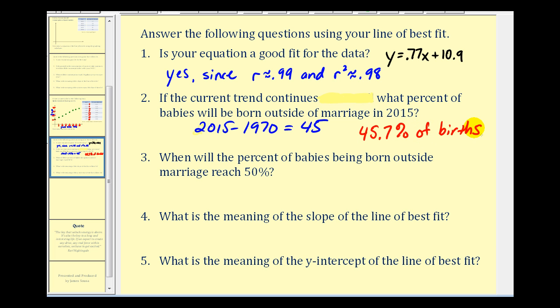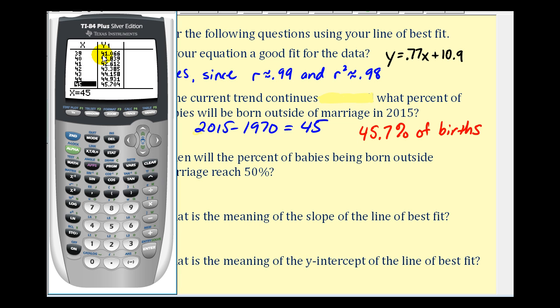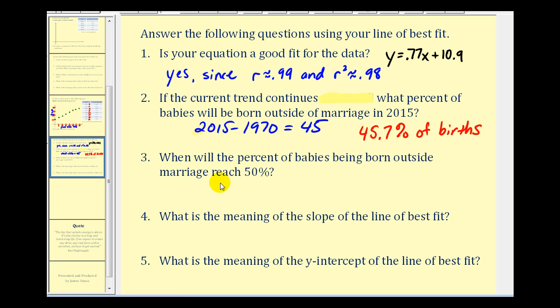Number three, when will the percent of babies being born outside of marriage reach 50%? Well, if we go back to the calculator, and now we want to determine what x value would produce a y value of 50%. So we'll scroll down further until we see the y value equal to 50%. So it doesn't quite reach it when x is 50, but when x is 51, it does reach over 50%. So x equals 51 represents the year where 50% of the births are outside of marriage. So the base year is 1970 plus 51, so again, based upon our model in 2021, 50% of the births in the US will be outside of marriage.